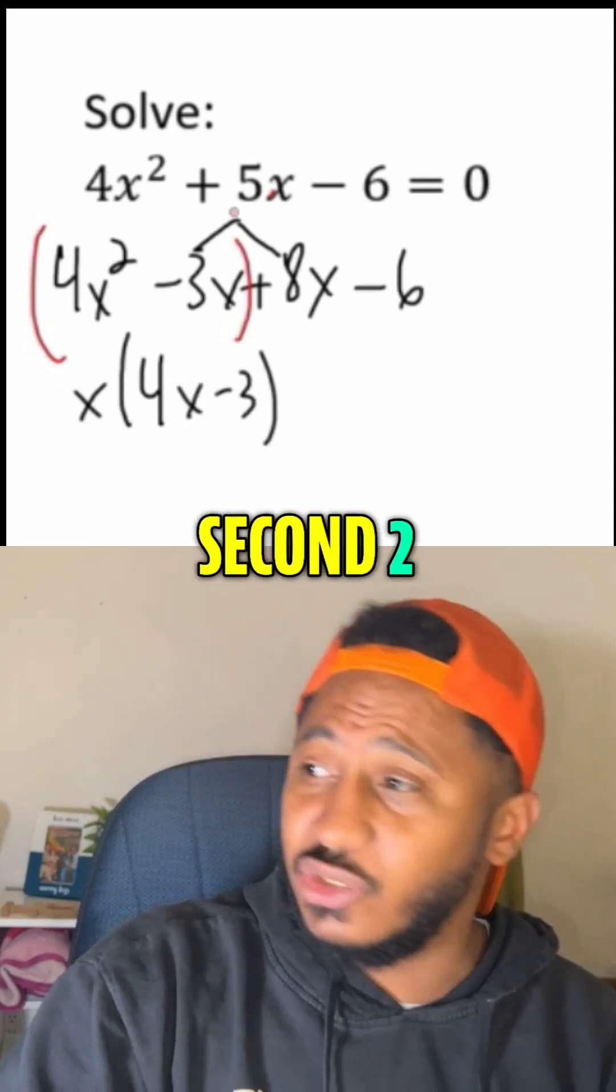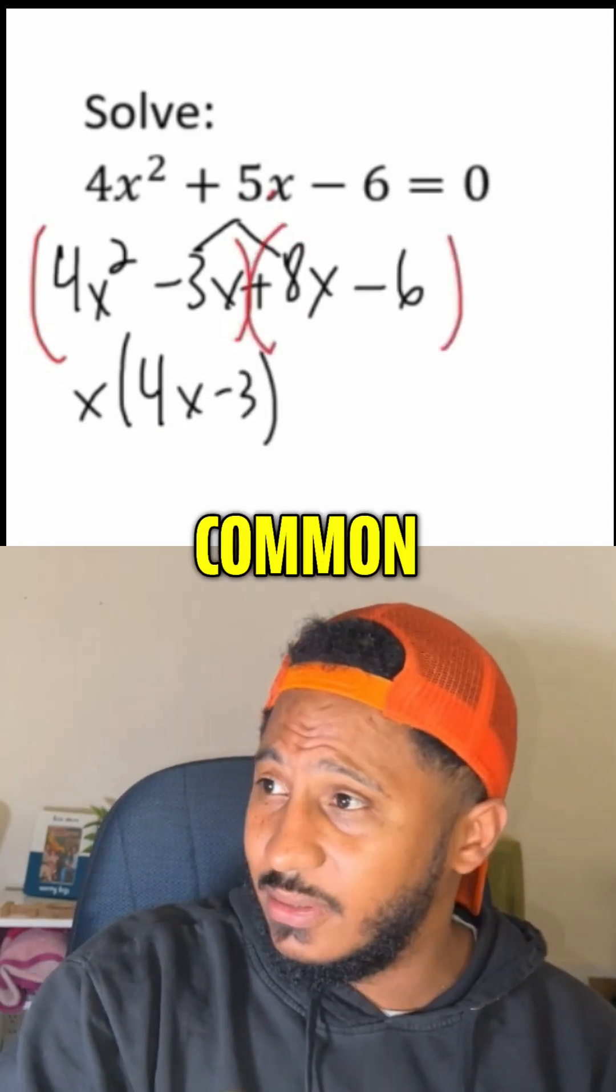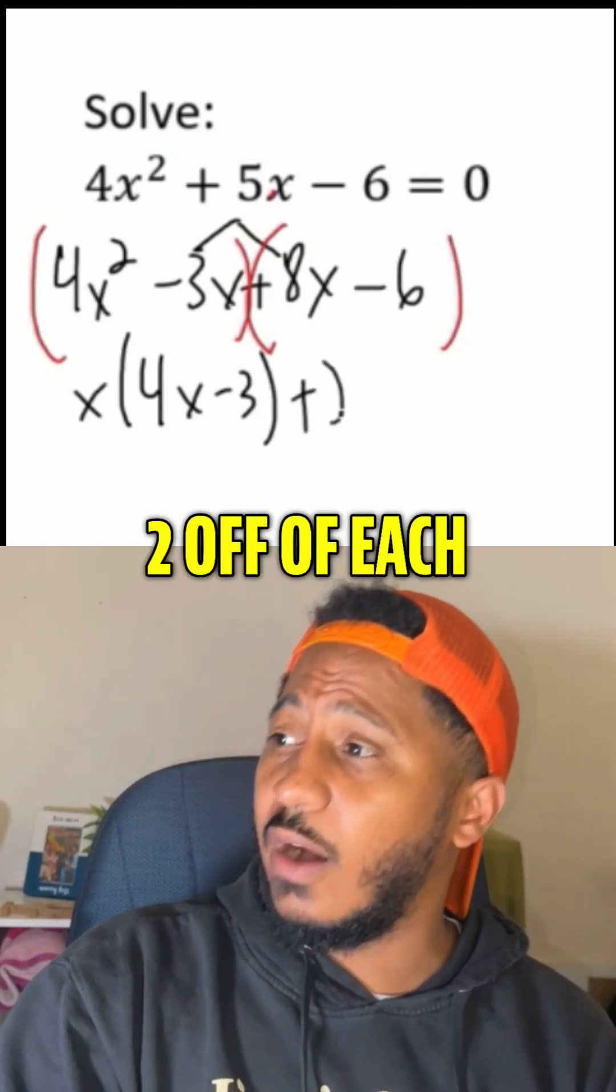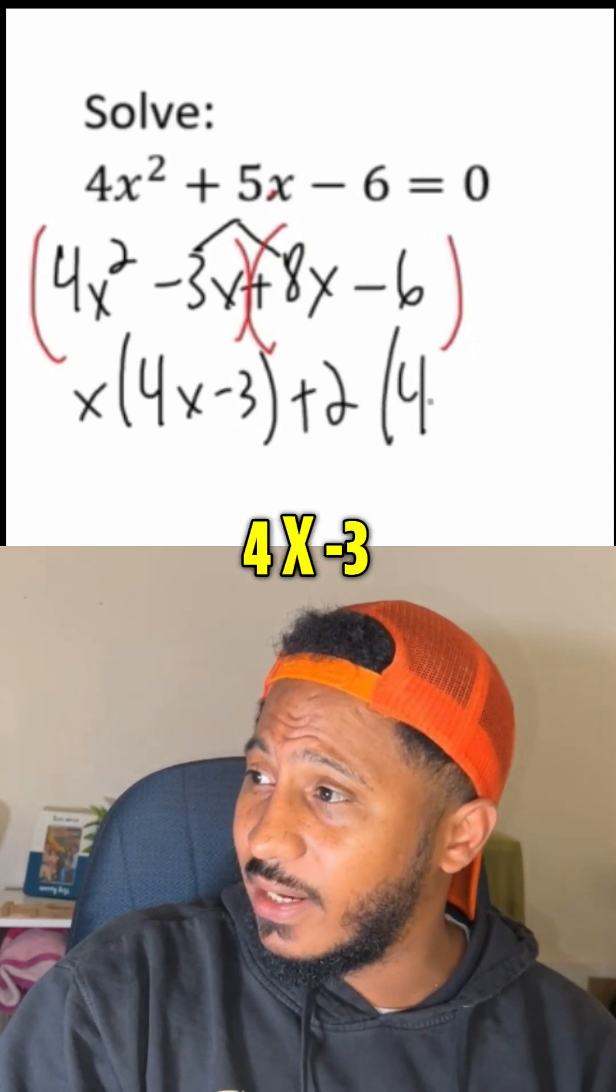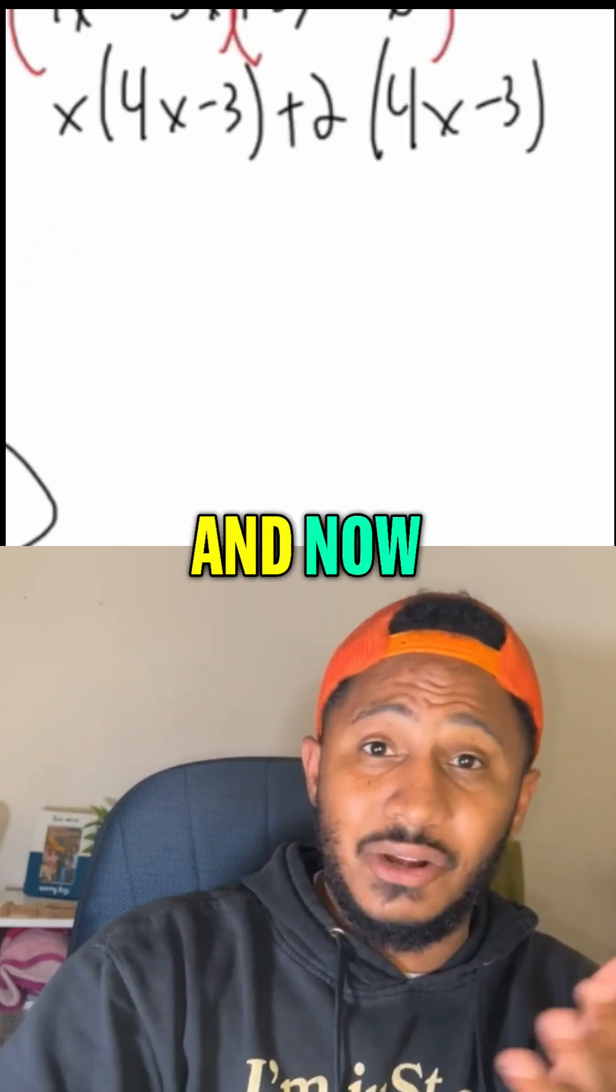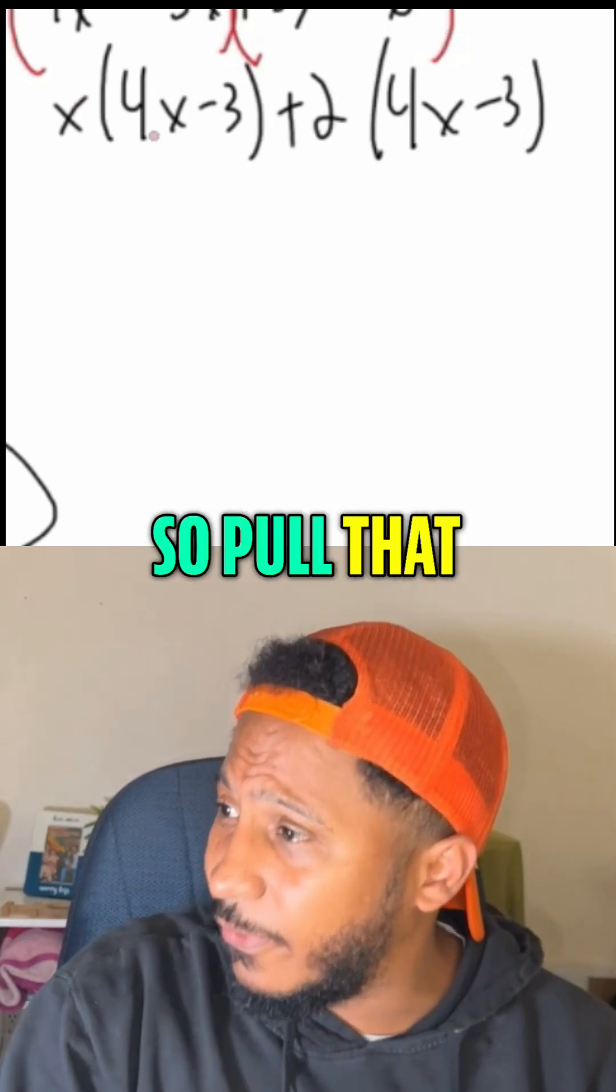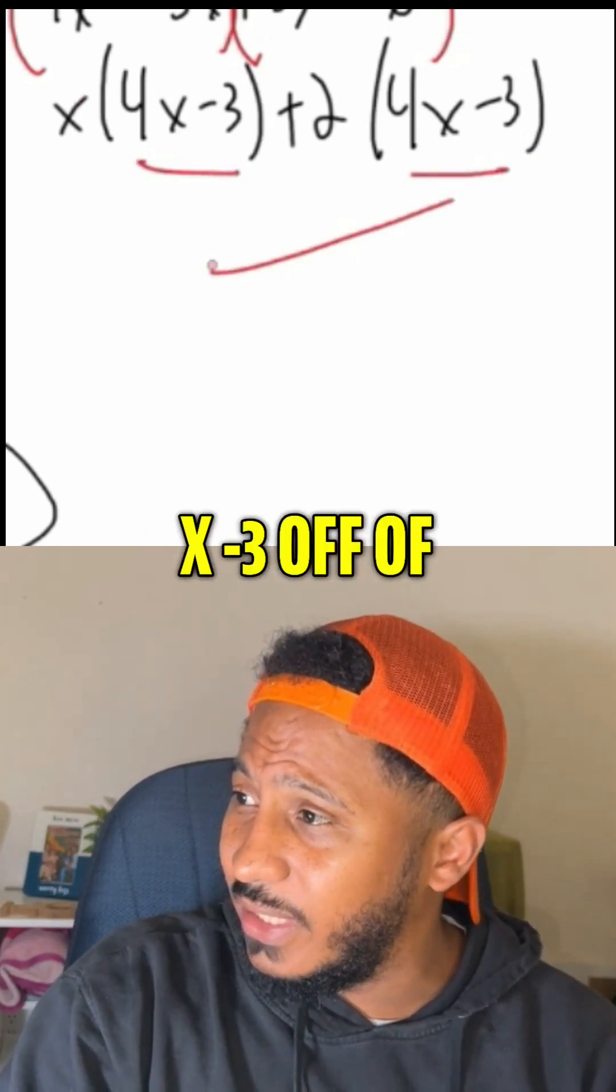Group these second two. What's their GCF? They both have a 2 in common. So we'll pull a positive 2 off of each. What's left? 4x minus 3. And now, they both have the 4x minus 3 in common. So we'll pull that 4x minus 3 off of each.